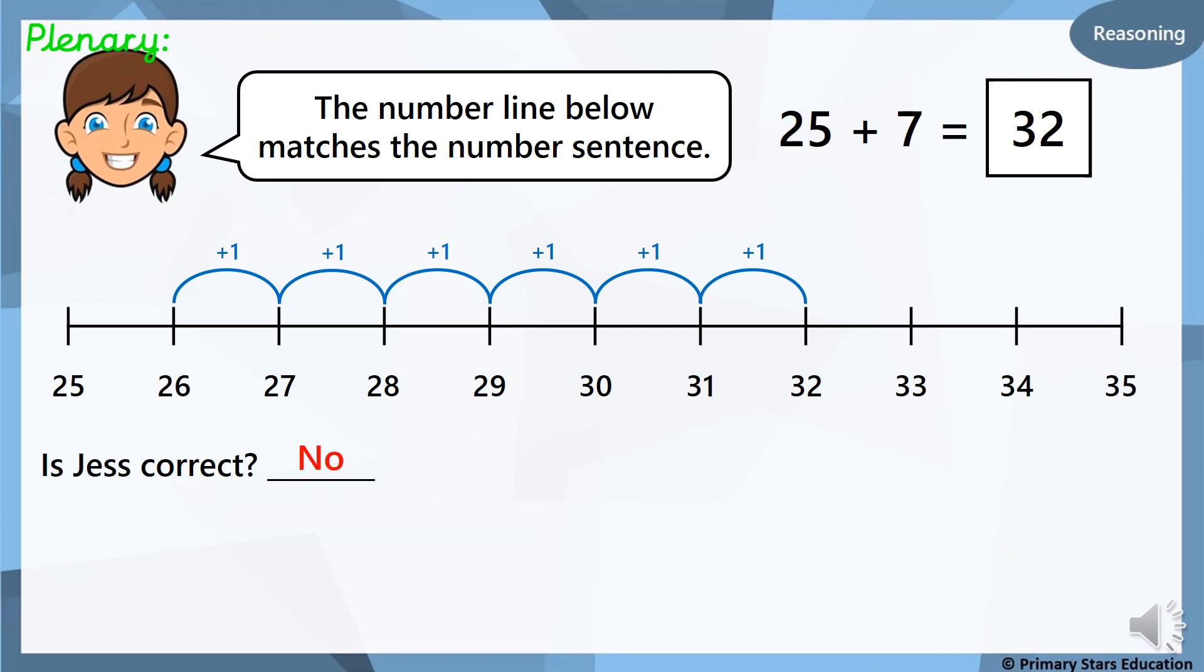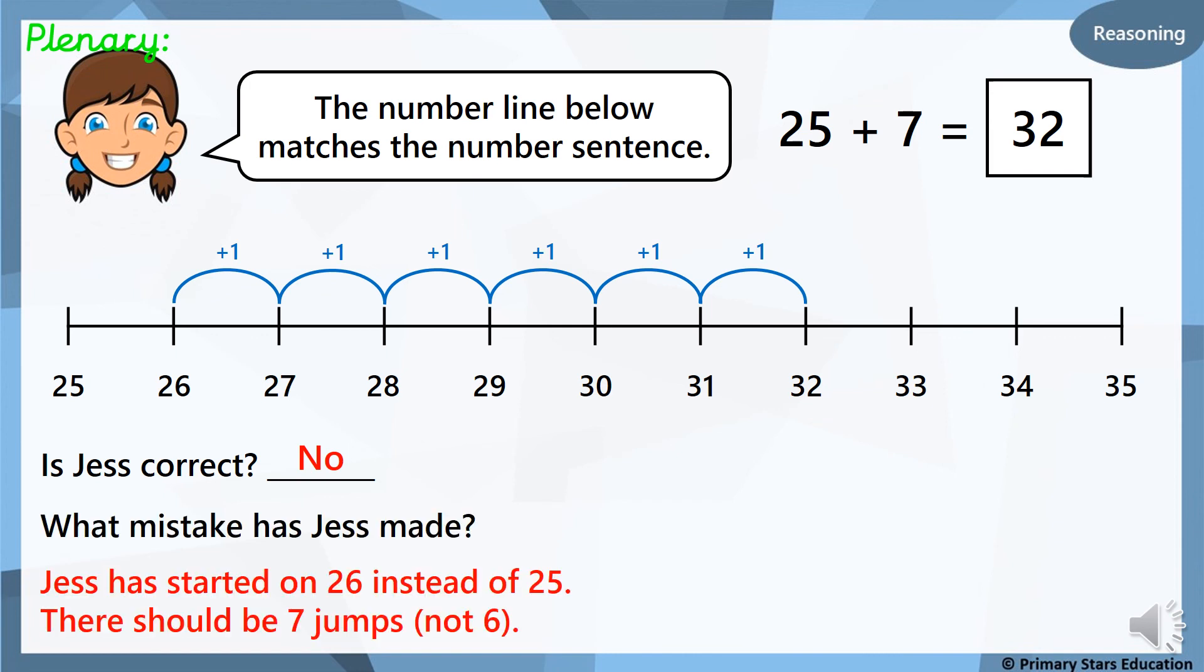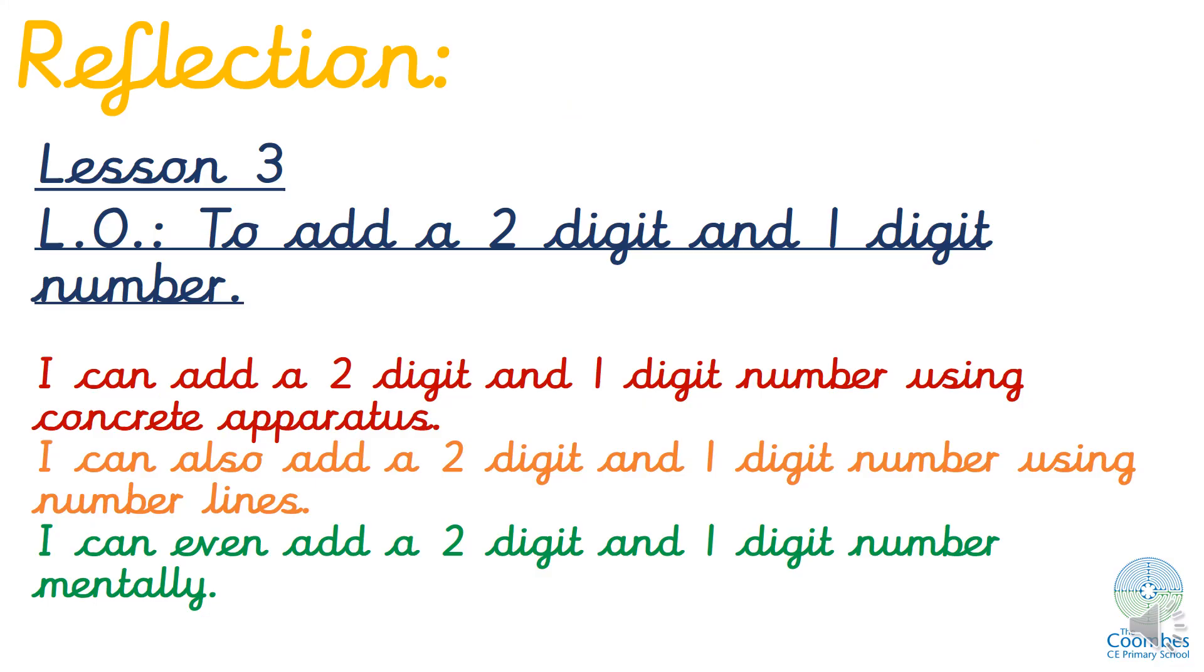Right, so no, Jess is not correct. And the mistake she has made, Jess has started at 26 instead of 25. So she's only done 1, 2, 3, 4, 5, 6. And there should be 7 jumps, so she needs to draw that extra jump in there. Well done for working with number lines today and I will see you tomorrow. Bye.